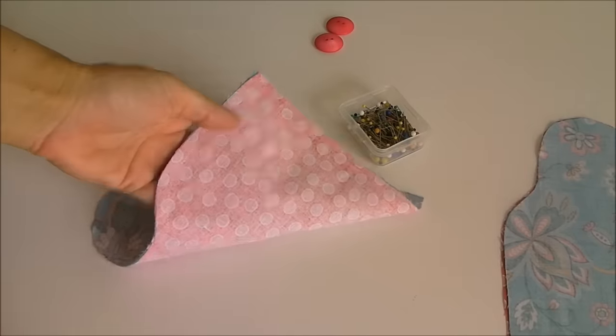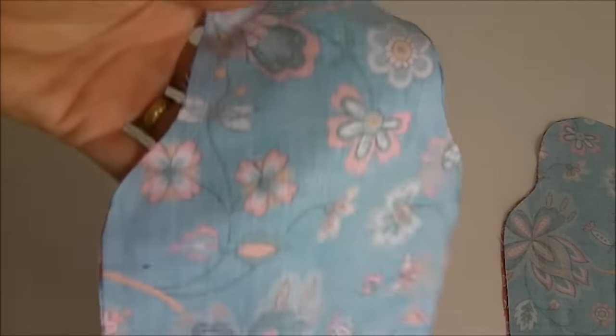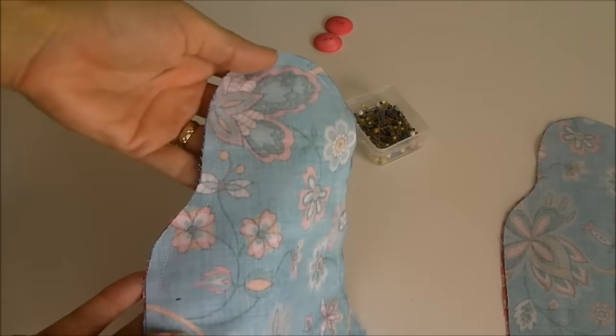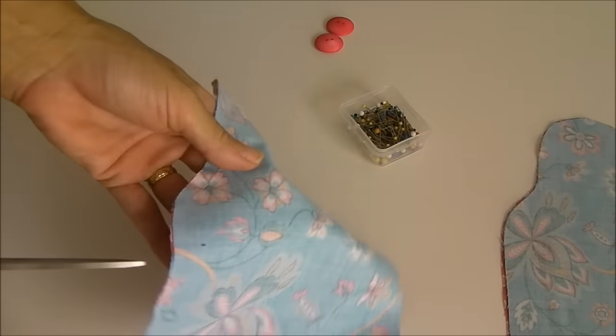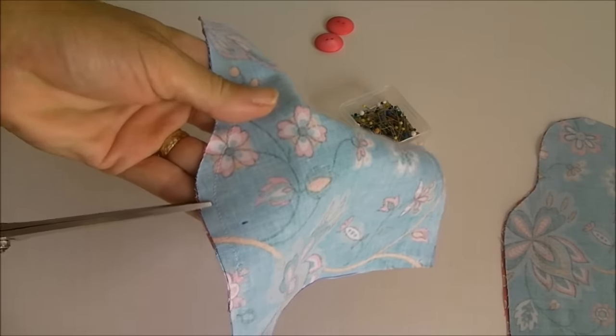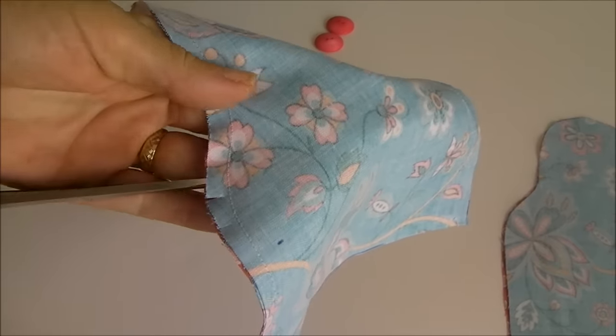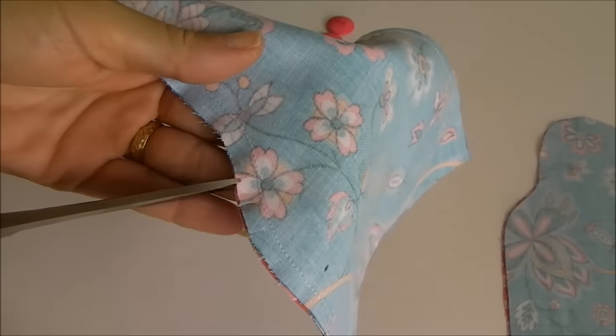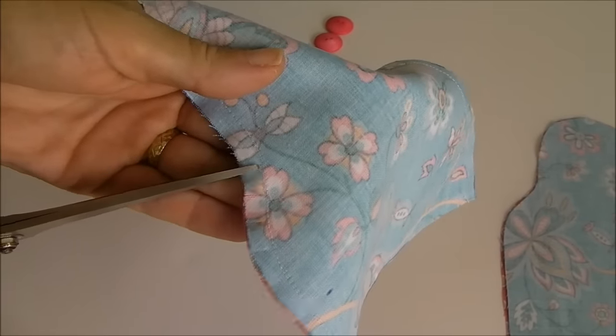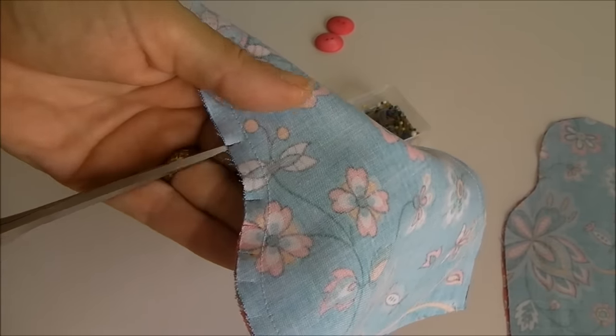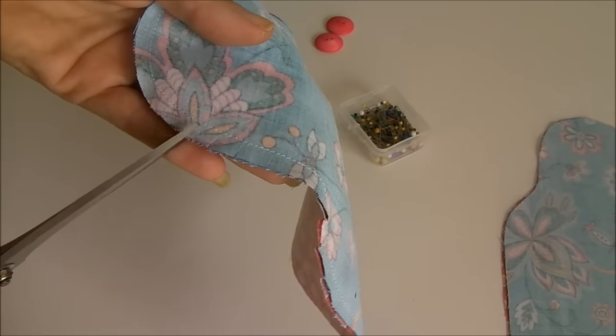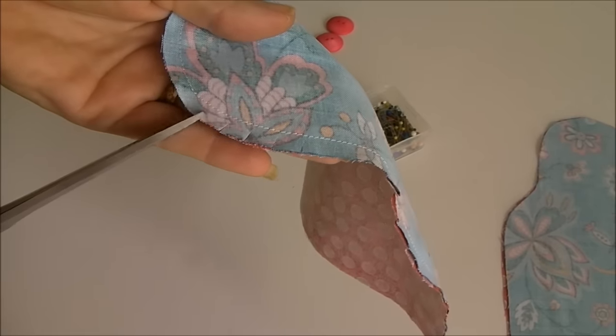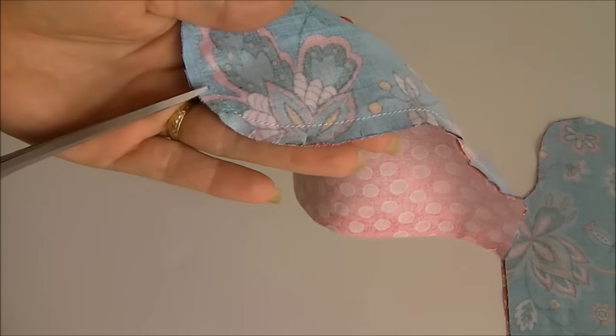So my piece is now sewn, but there are quite a lot of curves on this piece. And if we just tried to turn it out now, some of these curves, they wouldn't sit very nicely. So wherever you have a curved seam, you just take your scissors and make a little series of snips. Do it reasonably close to the stitching, but obviously not so close that your fabric is going to be damaged or so close that you're going to actually cut through the stitching itself. And I'm going to follow these curves and just make a little series of snips all the way around.